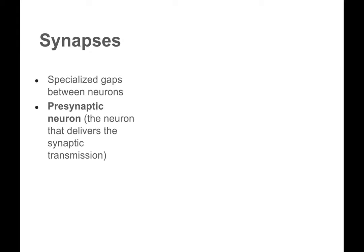Some terms we need to understand: the pre-synaptic neuron is the term that we use for the neuron that's delivering the synaptic transmission — the one that's sending the message to another neuron.